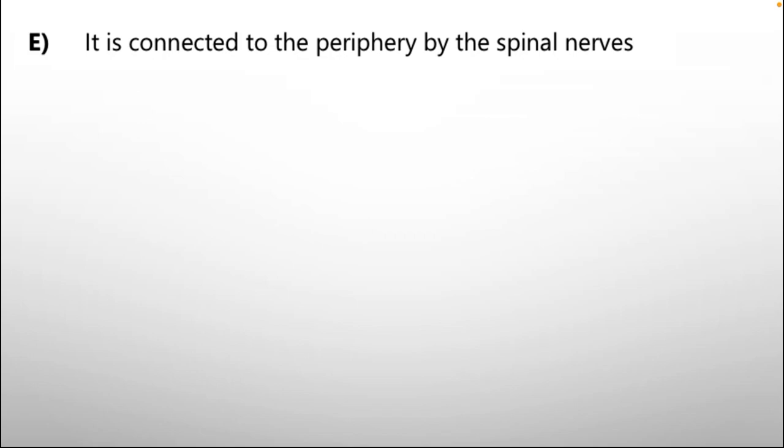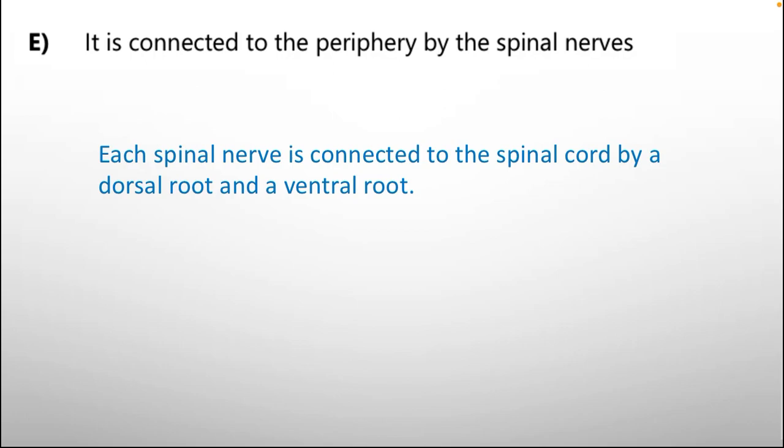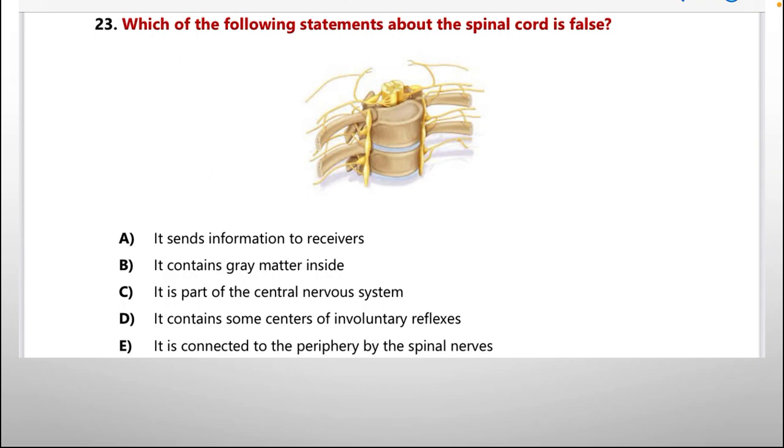Option number E: It is connected to the periphery by the spinal nerve. Each spinal nerve is connected to the spinal cord by a dorsal root and a ventral root. So this is also correct. So, this false statement is only option number A. And that one is our correct option.